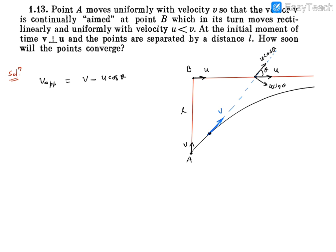This is the velocity of approach. If we write the distance between them, we will write it as minus ds by dt. The rate at which the distance is reducing is going to be v minus u cos theta. If we rearrange, then we will write it as ds equals v minus u cos theta dt.